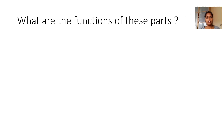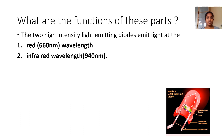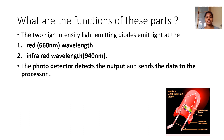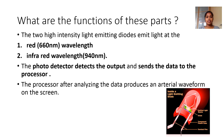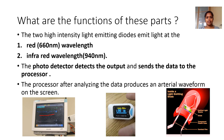What are the functions of these parts? The LED, applied on the nail part of the finger at the topmost part of the pulse oximeter, emits light at two wavelengths — one is the red at about 660 nanometers and the other is the infrared wavelength. The photodetector, present at the bottom part, detects the output and sends the data to the processor. The processor analyzes the data and produces an arterial waveform on the screen — the blue part shown here is the arterial waveform.